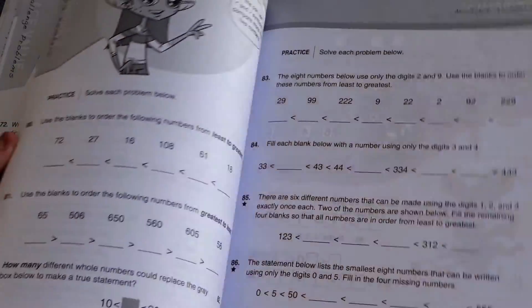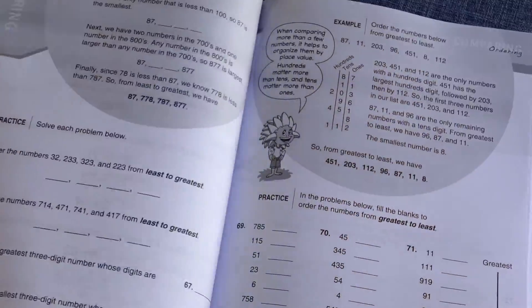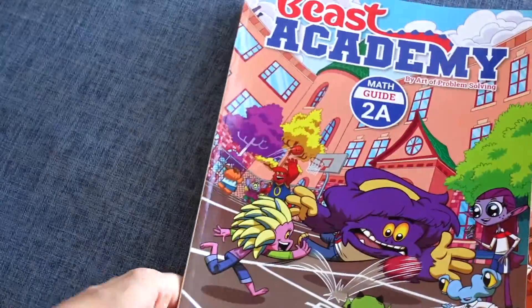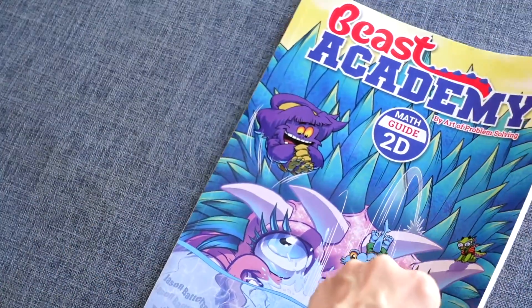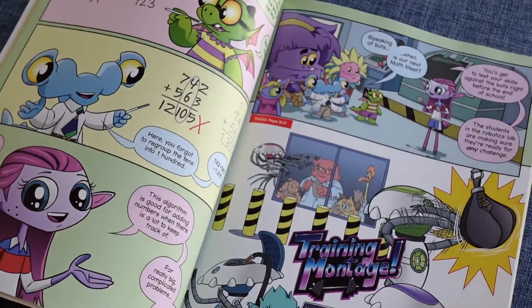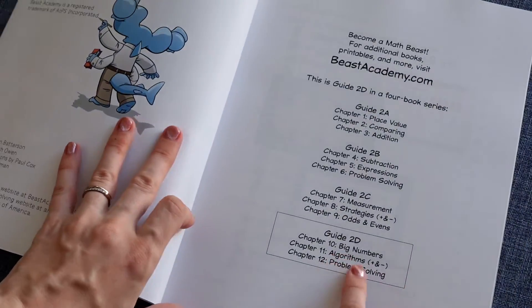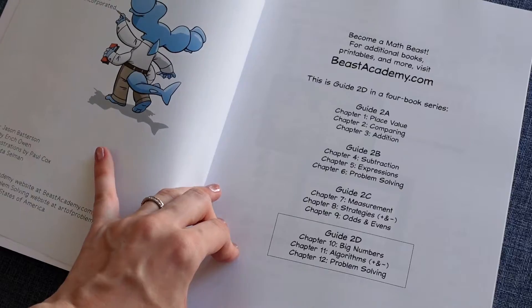But here's, as you can see, there's quite a good amount of practice offered for this first guidebook. I'm going to skip ahead to showing you 2D just to show how it kind of levels up a little bit in complexity. So here's our math guide for 2D. So this is where we get big numbers, algorithms, and problem solving.